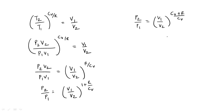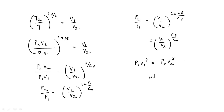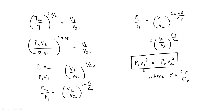Since for an ideal gas Cv plus R equals Cp, we obtain P1V1^γ equals P2V2^γ, where γ is defined as the ratio of the two specific heats Cp/Cv. This is the relation between pressure and volume of a monoatomic ideal gas when it expands adiabatically and reversibly. If we know the final pressure P2, we can calculate the final volume V2 using this expression.